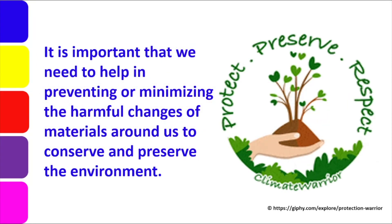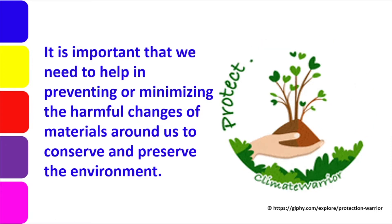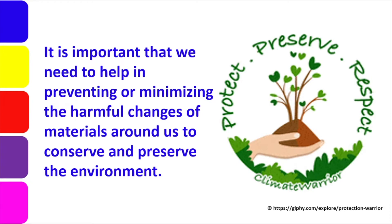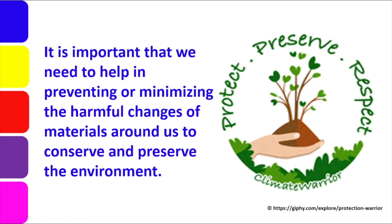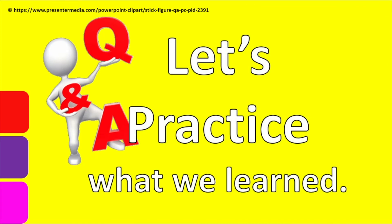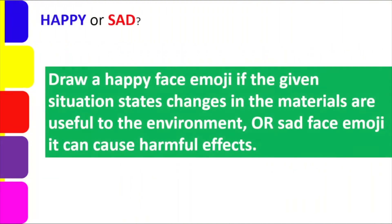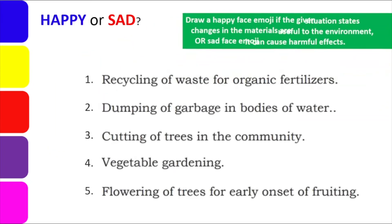It is important that we help in preventing or minimizing the harmful changes of the materials around us to conserve and preserve the environment. We need to know how to help stop the negative types of changes because these are not just destroying things now but will also affect our future. For example, if the environment is already destroyed today, what will happen to the future? Now that we have an idea about the good and bad changes that happen in materials, let's practice what we learned. This activity is called happy or sad. Draw a happy face emoji if the given situation states changes in materials are useful to the environment, and a sad face if the changes cause harmful effects.